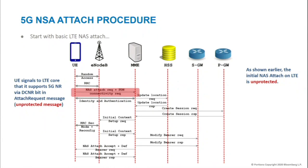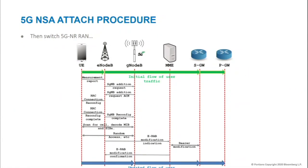In a legitimate NSA deployment, once connected, user traffic flows from the device through the LTE base station to the Internet. Then a couple of messages between the eNodeB and the 5G base station set things up. You do a couple of handshakes with the 5G base station and you're connected — now traffic flows through the 5G base station instead. All these messages here are unprotected, and the particular messages you exchange with the 5G base station are also unprotected — things you can intercept, spoof, and abuse.